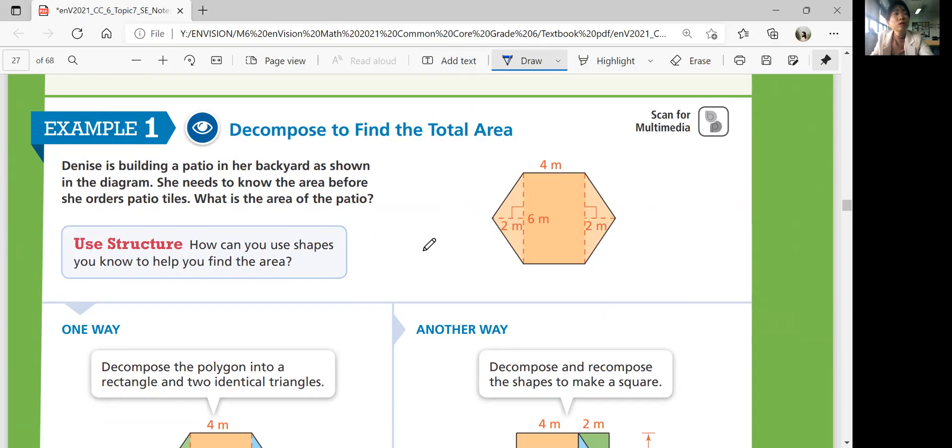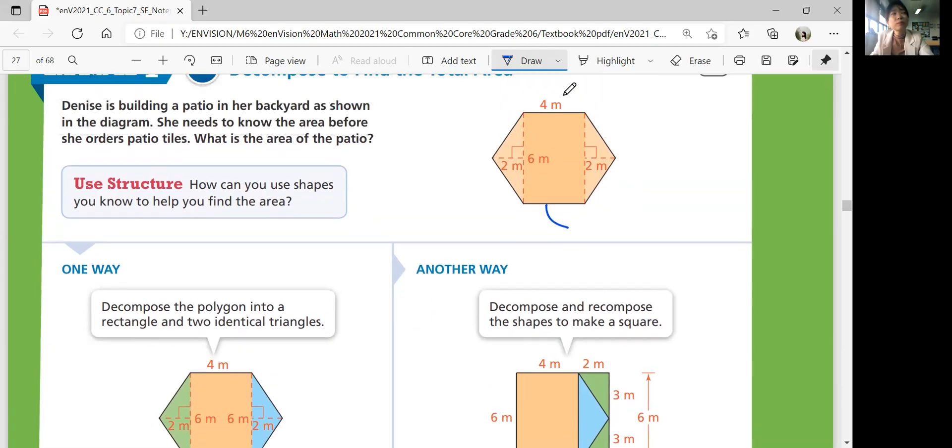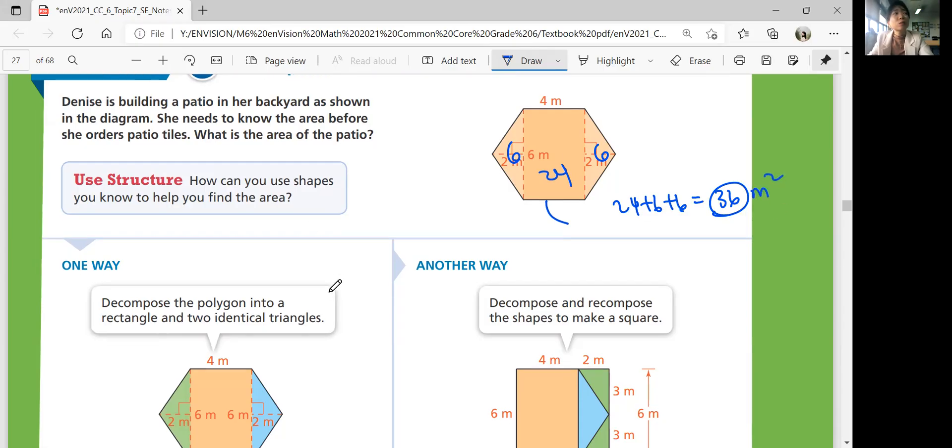She wants to know the area. So basically figure out the area for that. You already know how to solve for the area of a rectangle and triangle. So figure out each shape and add them. So the rectangle would be 4 times 6, which is 24. And then that would be 6 times 2 divided by 2, the area of this triangle. 6 times 2, base times height divided by 2, 12 divided by 2 is 6. So 6 for this big triangle. And then that's also 6. And so 24 plus 6 plus 6 is 36 square meters. That's one way.